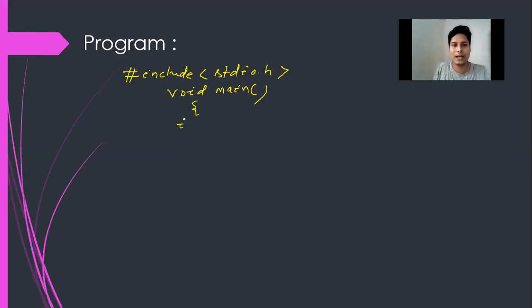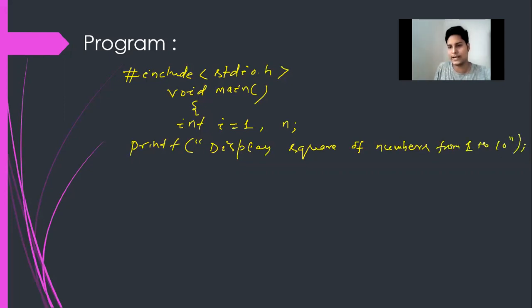So now I am declaring a variable int i is equal to 1, n semicolon. So now in the printf statement, display square of numbers from 1 to 10, double quotation and bracket and semicolon.